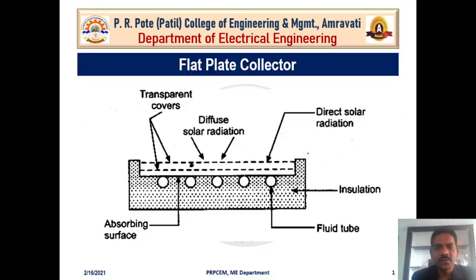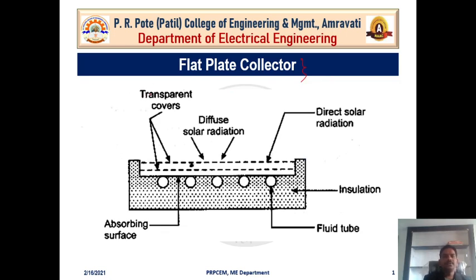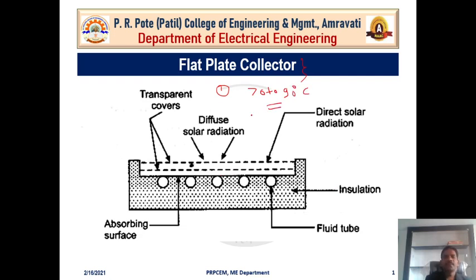Now let us discuss flat plate collectors first. The definition of a flat plate collector: it is a device which collects solar radiation and increases the temperature of a fluid from 17 to 90 degrees Celsius.